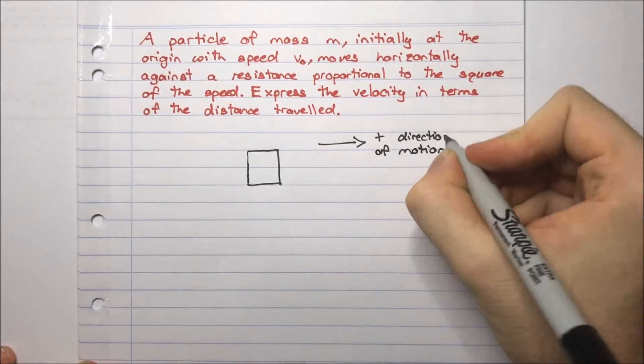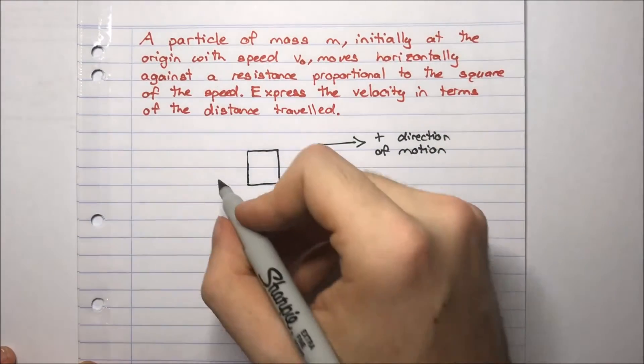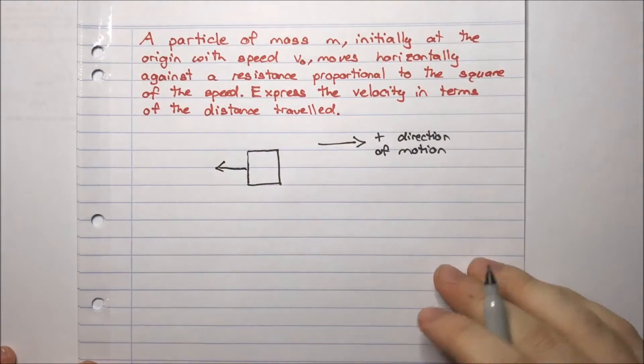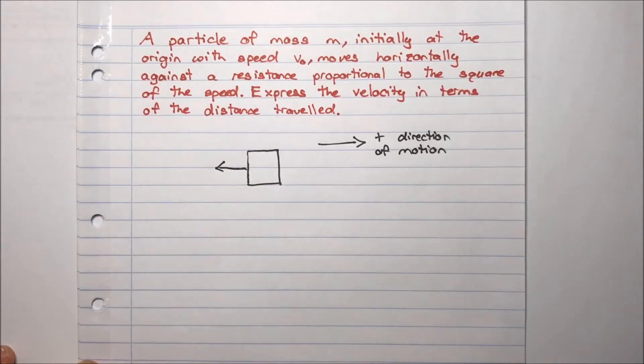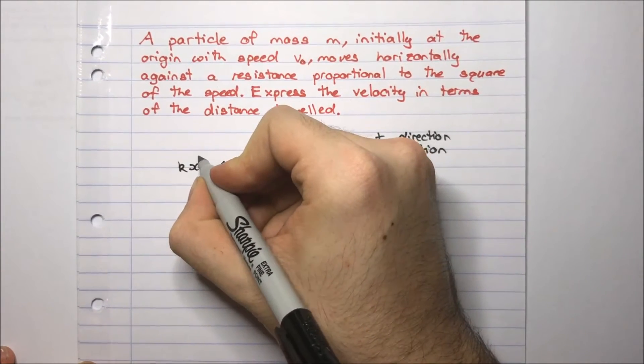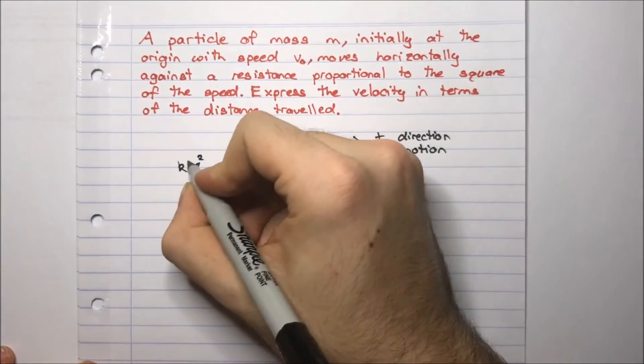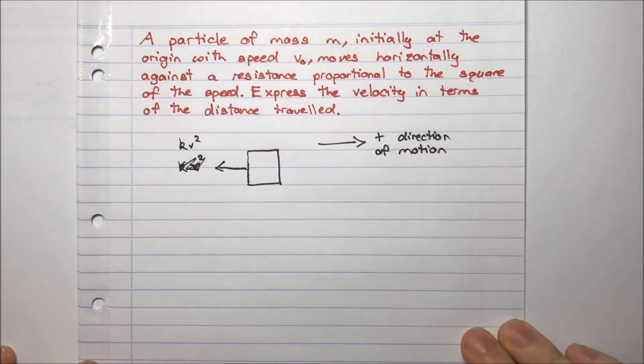And we know that there is a resistance proportional to the square of the speed. So a resistance would act in the opposite direction to the motion. So if we're going to the right, the resistance is to the left. And it's proportional to the square of the speed. So it's equal to some constant times the square of the speed. That should be a v, not an x. kv squared.